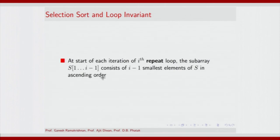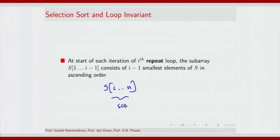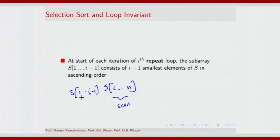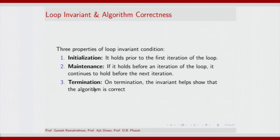The scan is over S[i..n] whereas the insertion is on the array S[1..i−1]. We need to discuss three properties of this loop invariant condition in order to use it to prove correctness of the algorithm. The first is initialization — you need to prove that the condition of S[1..i−1] being sorted holds prior to the first iteration of the loop.